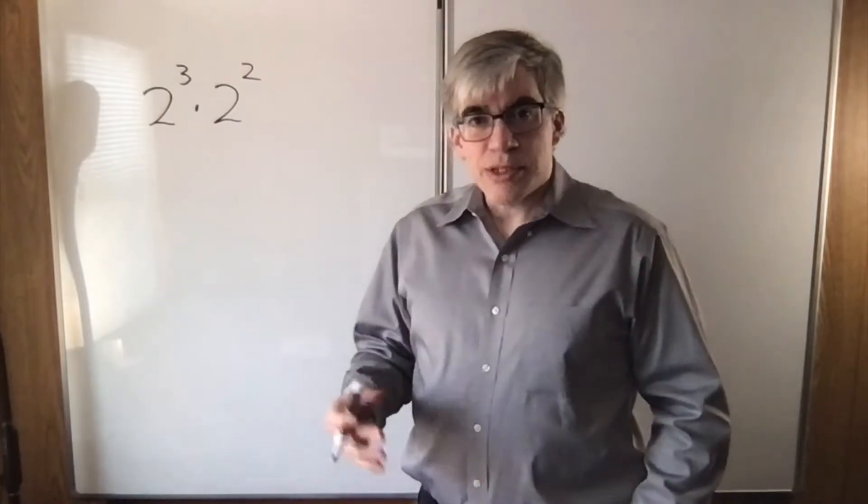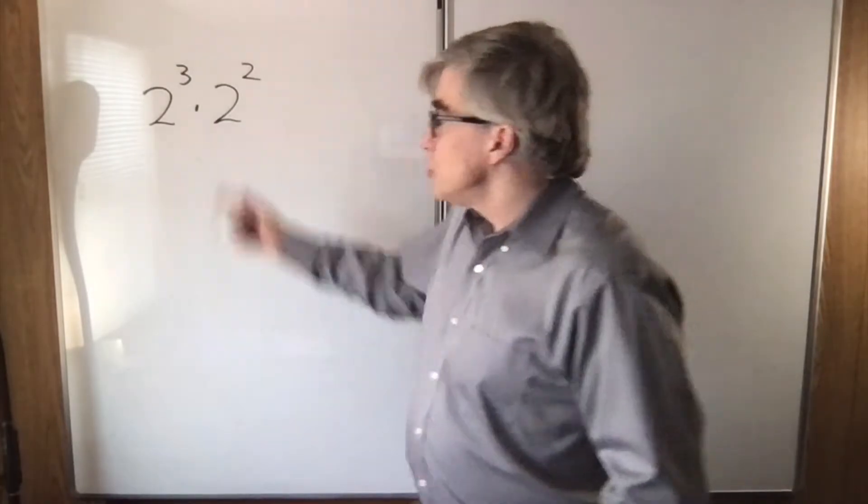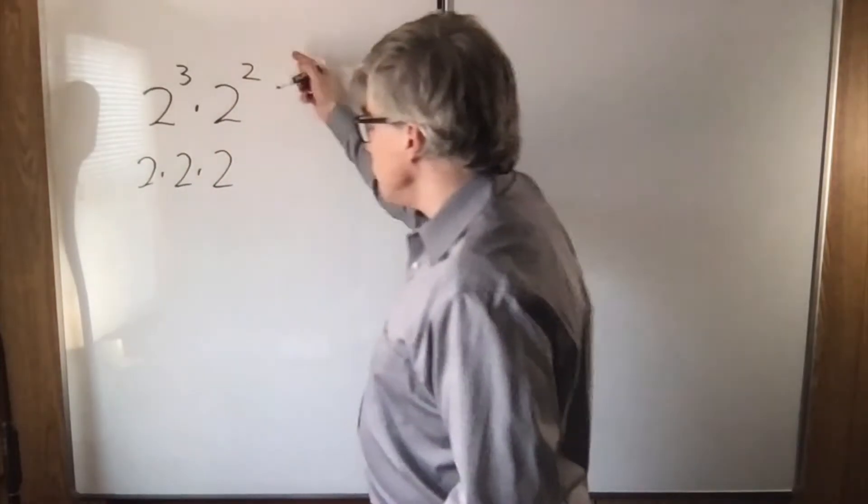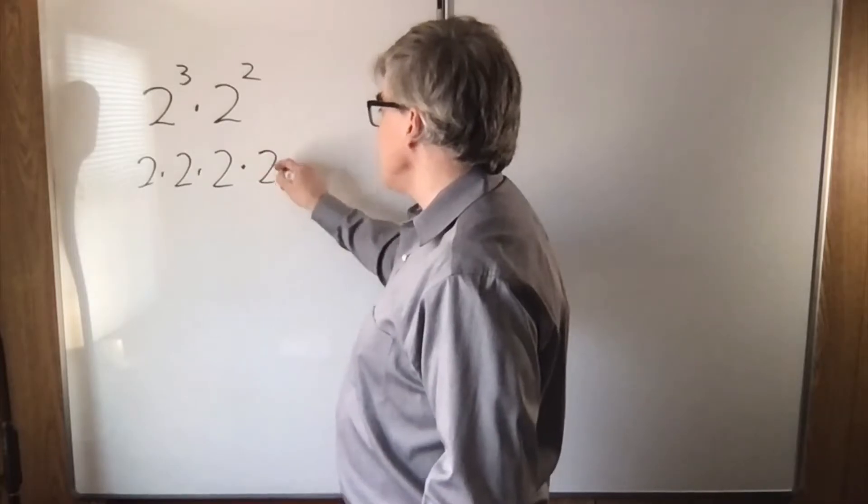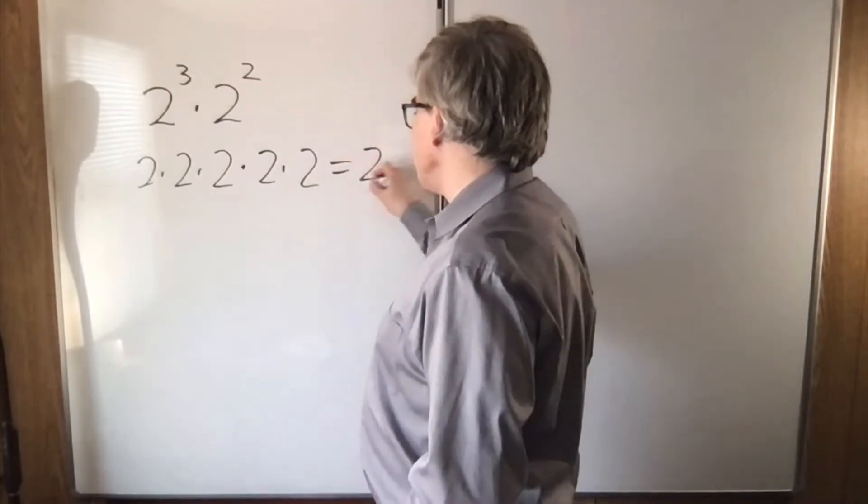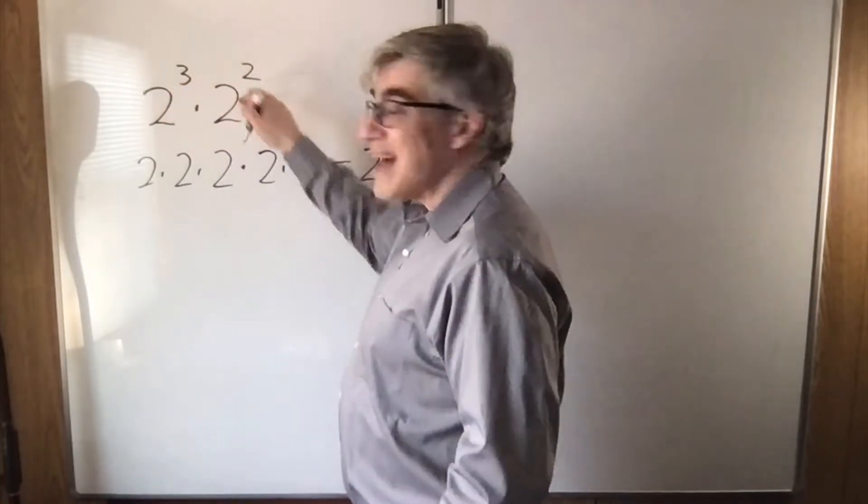My answer is, write out what they mean. 2 to the third means 2 times 2 times 2. 2 squared means 2 times 2. There are five twos, so it's 2 to the fifth, and that makes it very clear why you add them.